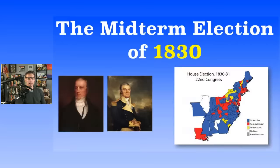Next up, we've got 1830. By this time, Andrew Jackson is president — the Jacksonians took the country by storm in 1828. Two years later in 1830, the first midterm for Andrew Jackson, Jackson fervor continues. Democrats already had a hold before that. By the 1830 elections, the Jacksonians were calling themselves Democrats.